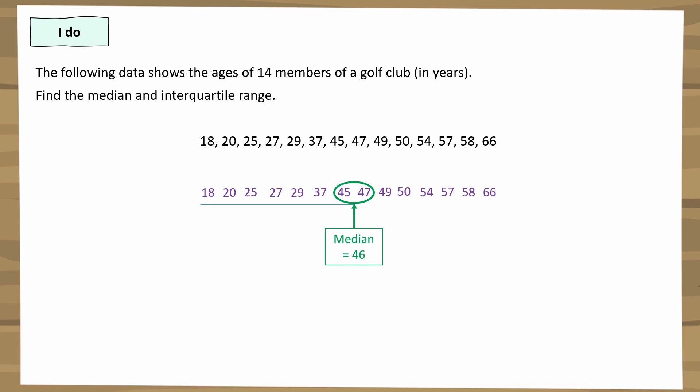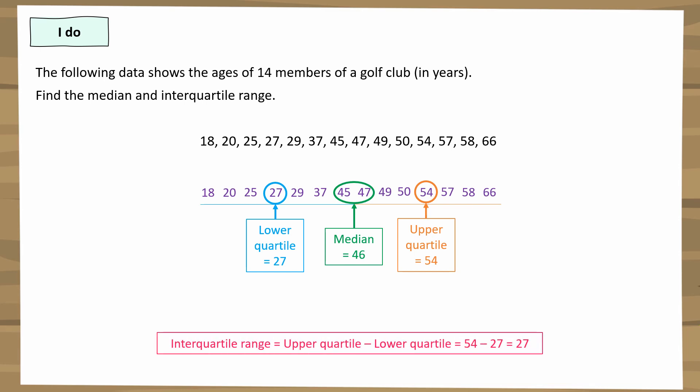For the lower quartile, I find the median of everything to the left of 46, which includes the 45: 18, 20, 25, 27, 29, 37, and 45. The median of those is 27 — that's the lower quartile. For the upper quartile, I find the median of everything to the right, including the 47: 47, 49, 50, 54, 57, 58, and 66. The median is 54. The interquartile range is 54 subtract 27, which is 27.